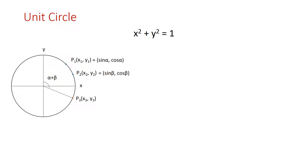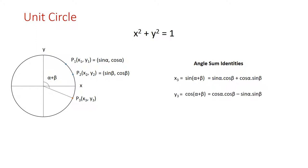Remember the angle sum identities. x3, which is the x-coordinate of the new point P3, equals sine(alpha plus beta), which can be expressed using the angle sum identity. y3, which equals cosine(alpha plus beta), can be expressed similarly based on the angle sum identity rules. We can thus construct any point P3 from known points P1 and P2 on the unit circle.